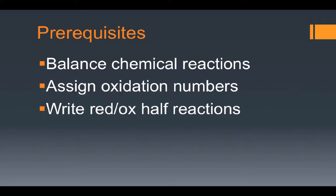Before we get started there are some prerequisites to this video. First of all you need to be able to balance regular chemical reactions. More recently you need to know how to assign oxidation numbers to individual elements based on charges and the rules we have for oxidation numbers. And last but not least you need to be able to identify what atoms are being oxidized and reduced, as well as be able to write reduction and oxidation half reactions.